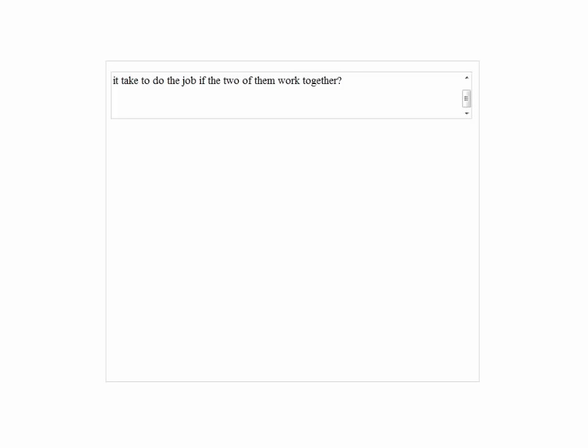First, let's look at the rate of job for each person. Since Jeff can mow the grass in five hours, in one hour he can finish one-fifth of one job. Mark can do the same job in ten hours, so he can do one-tenth of a job in one hour.